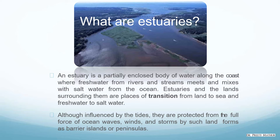What are Estuaries? Estuaries are a partially enclosed body of water along the coast where fresh water from rivers and streams meets and mixes with salt water from the ocean. Estuaries and the lands surrounding them are places of transition from land to sea and fresh water to salt water. Although influenced by the tides, they are protected from the full force of ocean waves, winds and storms by such landforms as barrier islands or peninsulas.